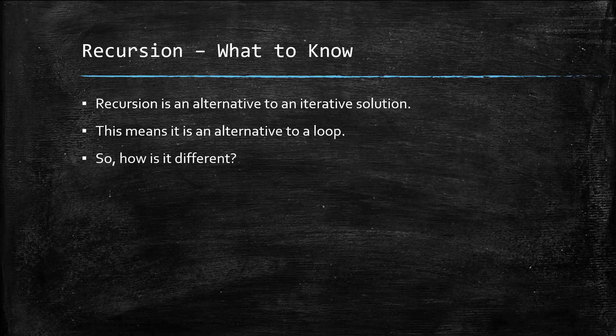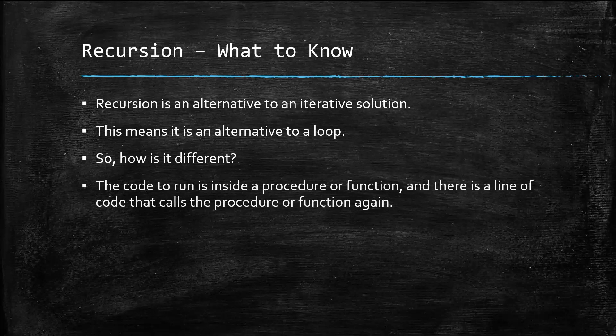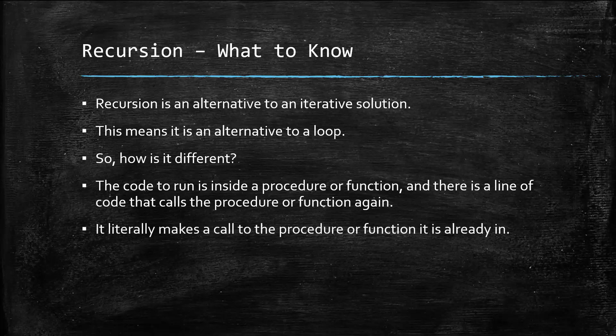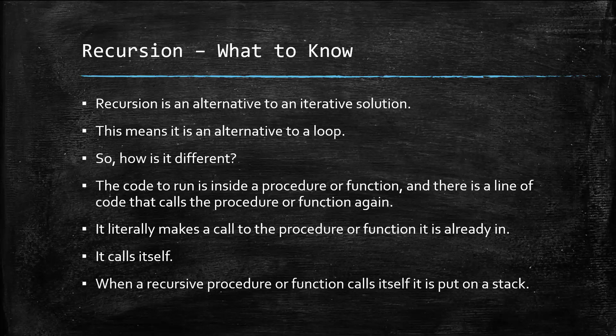But if it's an alternative, how is it different? The code to run is inside a procedure or function, and there's a line of code that calls that same procedure or function we're already in — it calls itself. When a recursive procedure or function calls itself, it's put onto a stack, and that is the foundation of how recursion works.